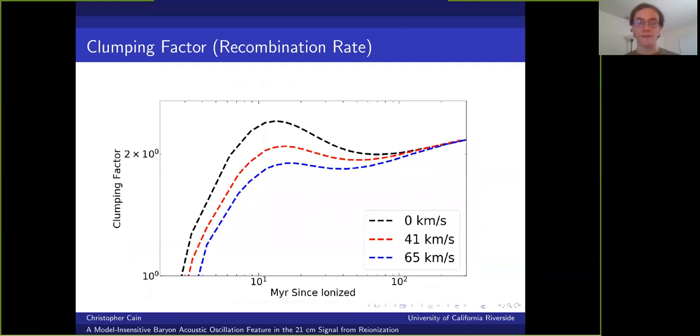We can quantify this entire process by looking at the clumping factor of ionized gas, which is proportional to the recombination rate. And you can see that after the radiation turns on, the clumping factor steadily rises as the radiation penetrates into the dense clumps of gas. And the clumping factor peaks after about 10 million years, at which time the variance between patches with different stream velocities, which I've shown here by the three different curves, is also at a maximum. And at this point the suppression in the clumping factor is about 10 to 15 percent for patches near the RMS value relative to the case with no stream velocity.